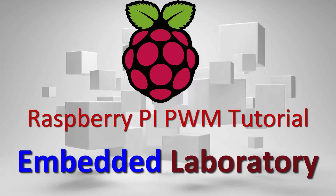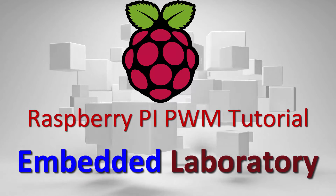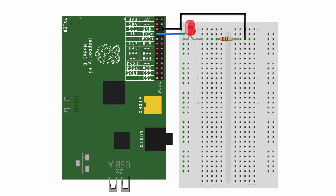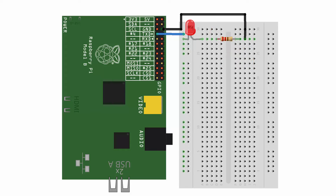Hello everyone. In this video I will show you how to control the brightness of a LED using PWM of Raspberry Pi. For circuit construction we need a LED of any color and a current limiting resistor of value 220 ohm to 1 kilo ohm. You can use any GPIO pin of Raspberry Pi to connect your LED.